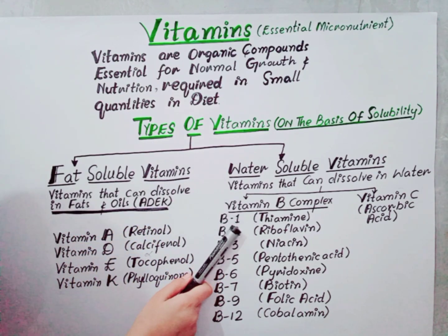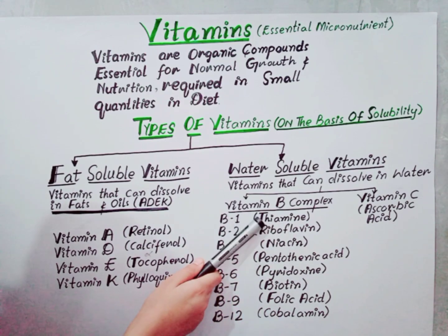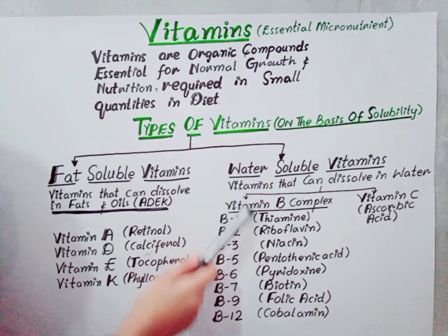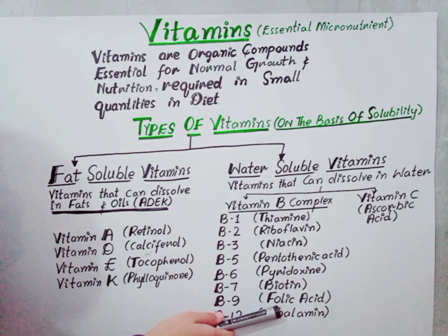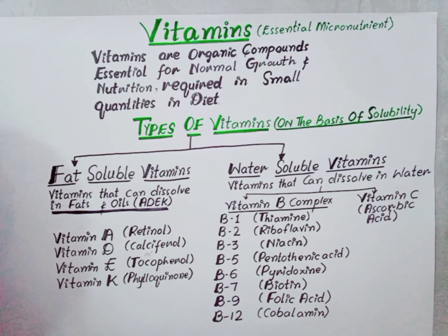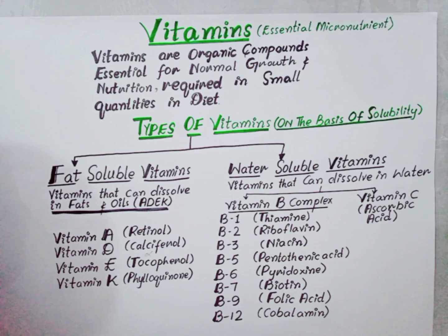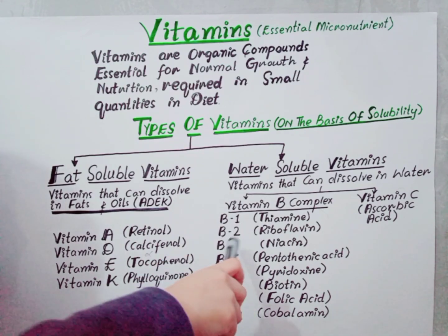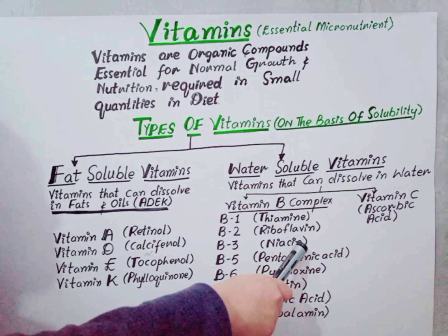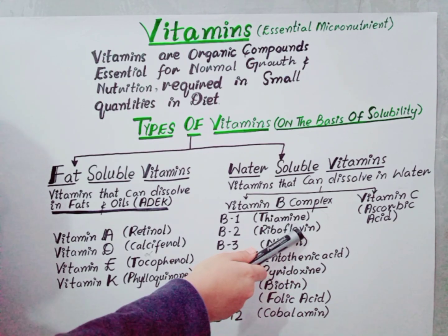Vitamin B1, also known as thiamine. All the B complexes serve as coenzymes in our body — coenzymes are agents which help enzymes to perform reactions very quickly. So vitamin B1 serves as a coenzyme in the body. Vitamin B2, riboflavin, also acts as a coenzyme and helps enzymes in various chemical reactions.